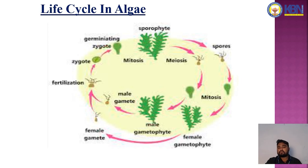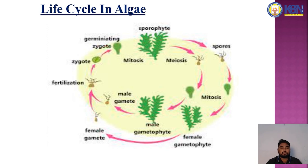The spores form female gametophytes and male gametophytes. After fertilization, the two gametophytes form the zygote. The zygote germinates to form the sporophyte, which then produces a number of algae. That is the life cycle of algae.